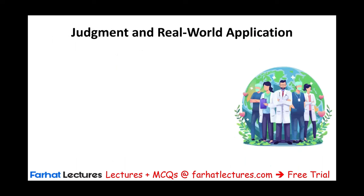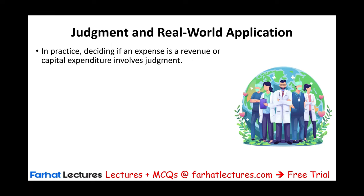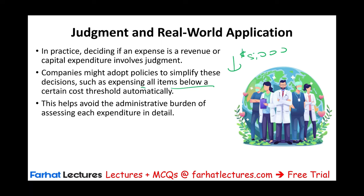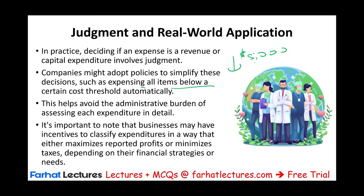In practice, deciding whether something is an expense or an asset involves judgment. Companies often have policies to simplify things — for example, expensing all items below a certain threshold, such as $5,000, regardless of their nature. This helps avoid the administrative burden of assessing each expenditure individually. The threshold could be $1,000 or $500, but you have to be consistent. It's also important to note the incentive for the business: companies may classify expenditures to either maximize reported profit or minimize taxes. For tax purposes, they prefer to treat it as an expense to reduce taxable income. For GAAP financial accounting purposes, they prefer to treat it as an asset to keep profit higher.